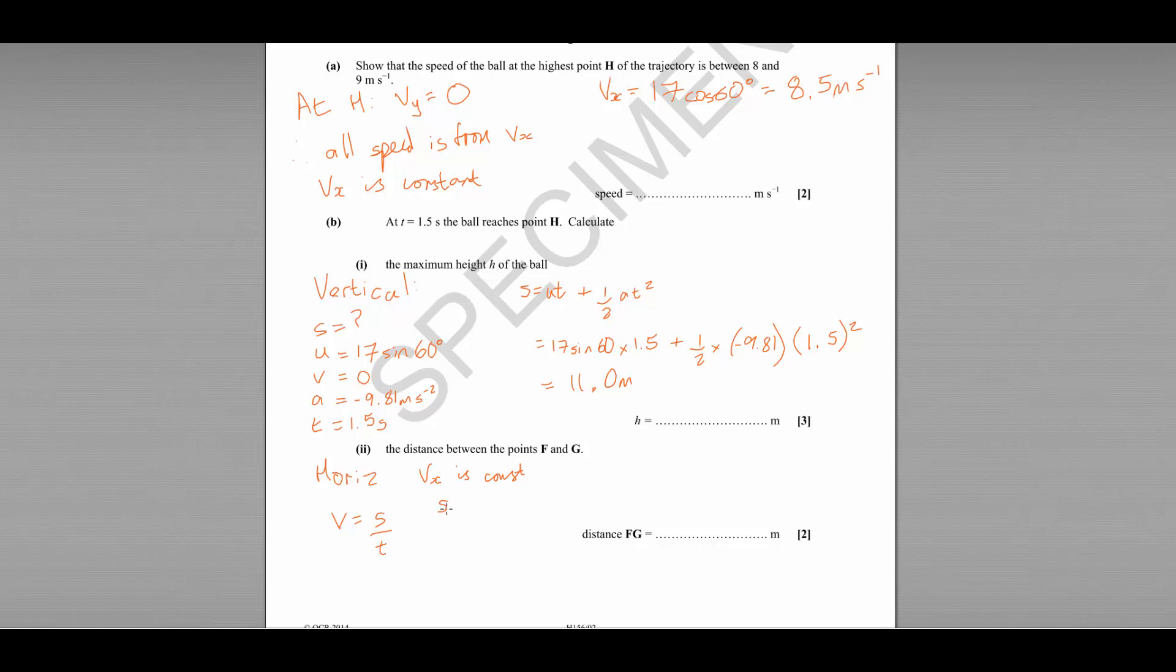which means that our displacement between F and G, S, is equal to VT, where V is 17 cos 60. That's the horizontal component of the motion. And T is 1.5 times 2.